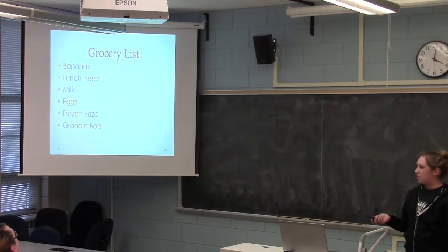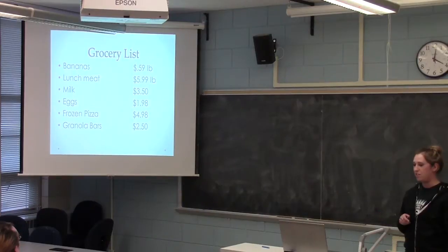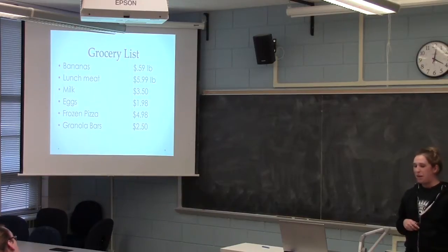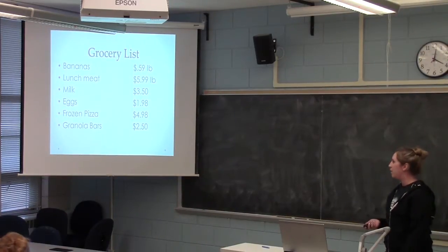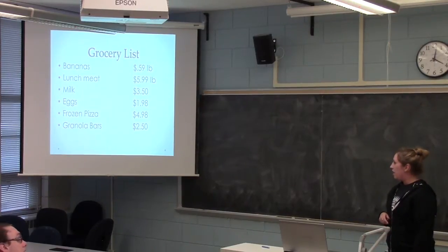So as we go through, there's clearly going to be prices on everything. You can say maybe you got a pound of bananas for 59 cents a pound. Maybe a pound of lunch meat, you're going to put some in the freezer for $5.99 a pound. A gallon of milk, about $3.50. Eggs, $1.98.